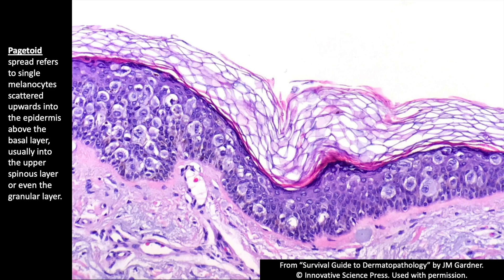This is classic pagetoid spread — very atypical melanocytes, even with some mitotic figures, spreading in a pagetoid pattern like buckshot into the epidermis, all the way up to the top. That's very characteristic.